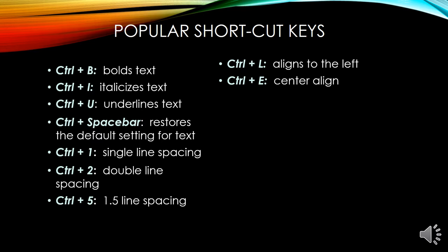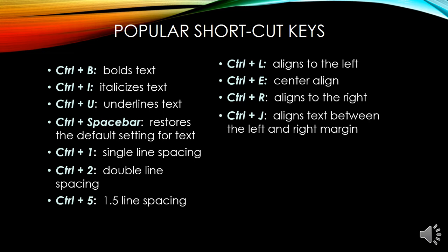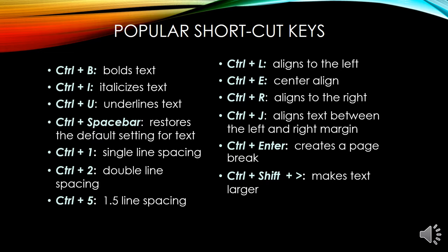Ctrl plus E will center a word or a paragraph. Ctrl plus R will right align either a paragraph or text. Ctrl plus J justifies the lines — that means it aligns from the left to the right margin. Ctrl plus Enter creates a page break and starts a new page. Ctrl plus Shift plus greater-than makes text larger. Ctrl plus Shift plus less-than makes text smaller.